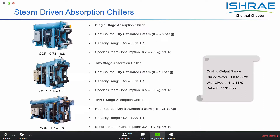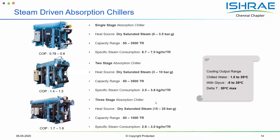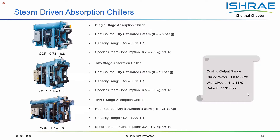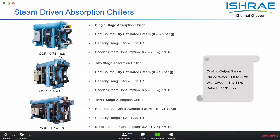When very high steam pressure is available, we can go for a three-stage absorption chiller, where steam consumption is less than 3 kilograms per hour per USRT. The output possible from an absorption unit with this heat source includes chilled water down to 1 degree Celsius of pure water, or if glycol solutions are used, down to minus 5 degrees Celsius using conventional lithium bromide absorption technology.